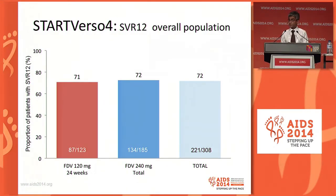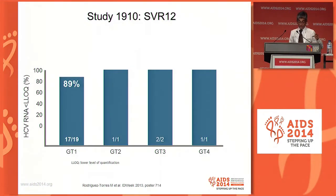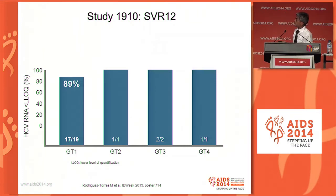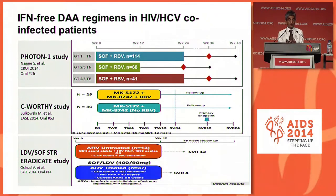A fourth study looking at faldaprevir showed that regardless of the dose used, response-guided therapy yielded over 70% sustained virological responses. With the Gilead drug sofosbuvir plus PEG and ribavirin for just 12 weeks, we saw 90% sustained virological responses across genotypes 1, 2, 3, and 4. This clearly showed that it is possible to shorten duration of therapy with DAAs and PEG interferon and ribavirin.